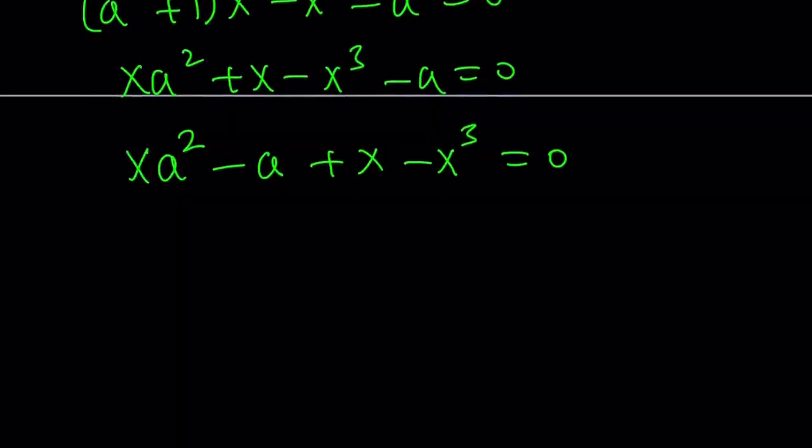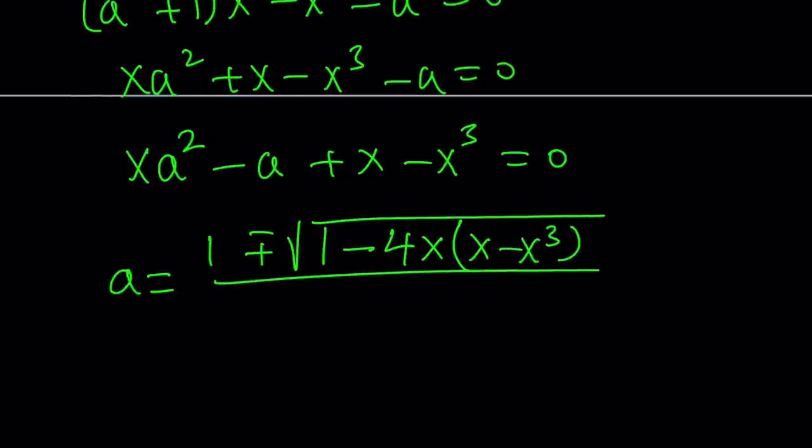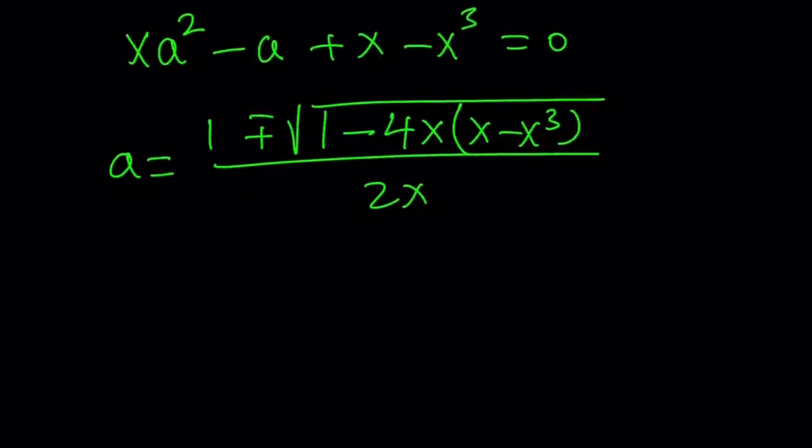Let's use the quadratic formula. a equals negative b, which is 1, plus minus the square root of b squared, which is 1, minus 4ac. That's going to be 4 times x times x minus x to the third power, all divided by 2a, which is 2x. Now we got the quadratic formula, but let's simplify what's inside the radical because that's going to be the most interesting part. So let's isolate that for now and distribute and simplify, and then we can plug it back in.